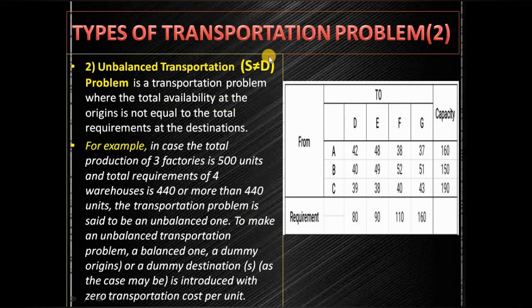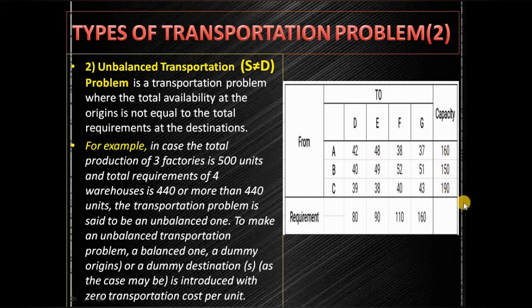Another type is the unbalanced transportation problem — the opposite of balanced, where supply is not equal to demand. For example, if factory capacities A=160, B=150, C=190 total 500, but destination requirements D=80, E=90, F=110, G=160 total only 440, then capacity is higher than requirement and this is an unbalanced transportation problem.